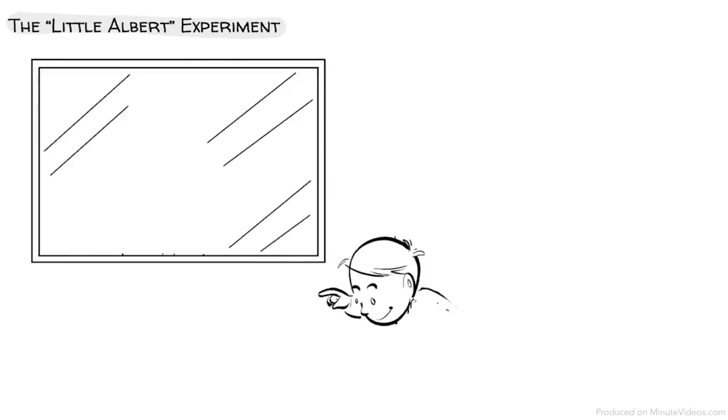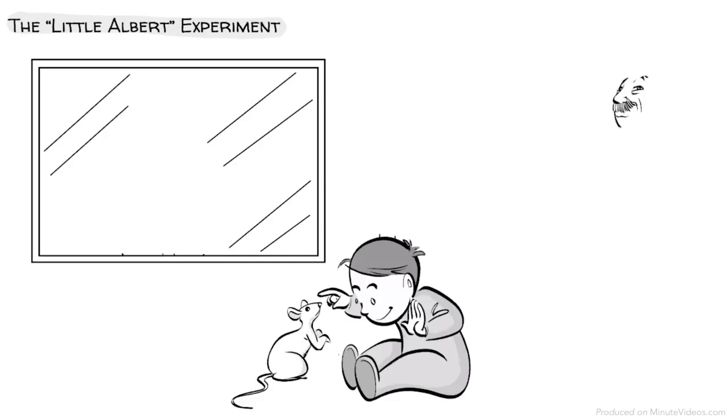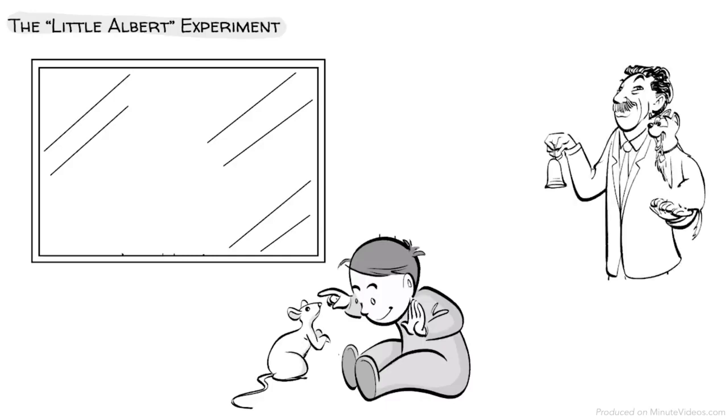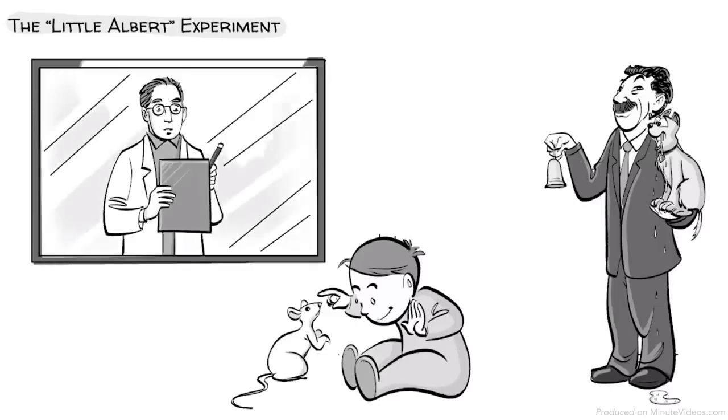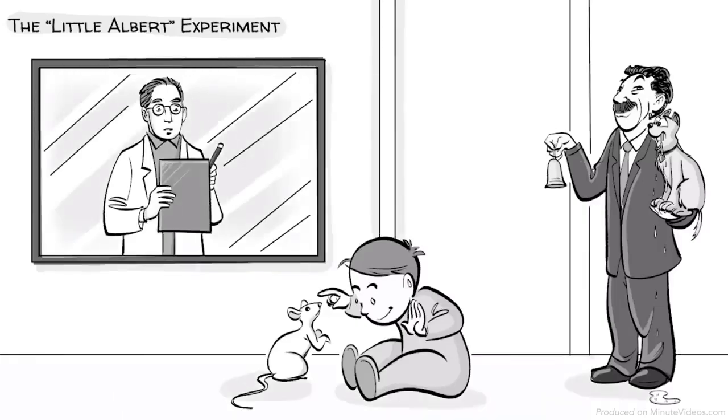With the Little Albert experiment, Watson used the method of classical conditioning to program a baby to be afraid of a lab rat. Earlier, Pavlov demonstrated how conditioning can trigger biological responses that are inherited genetically. Watson hypothesized that we can also instill new behaviors that were not inherited.